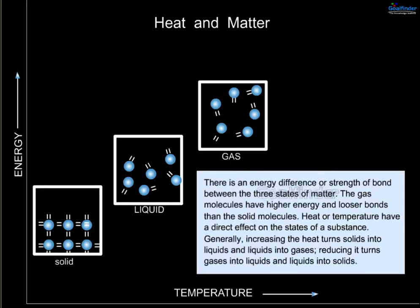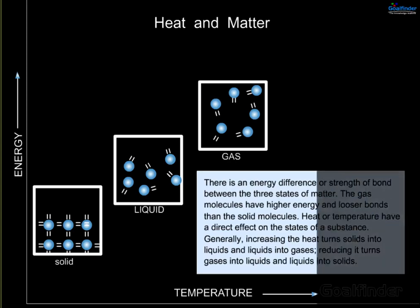There is an energy difference, or strength of bonds, between the three states of matter. Gas molecules have higher energy and looser bonds than solid molecules. Heat or temperature has a direct effect on the state of a substance — generally, increasing heat turns solids into liquids and liquids into gases, while reducing it turns gases into liquids and liquids into solids.